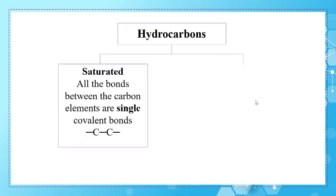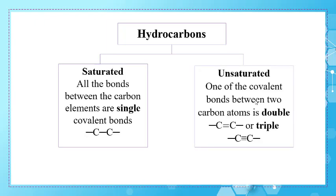Hydrocarbons can be classified into two groups: saturated hydrocarbons and unsaturated hydrocarbons. Saturated hydrocarbons are hydrocarbons where all the bonds between carbon atoms are single covalent bonds. Unsaturated hydrocarbons have at least one double covalent bond or triple covalent bond, in which case the hydrocarbon is said to be unsaturated.